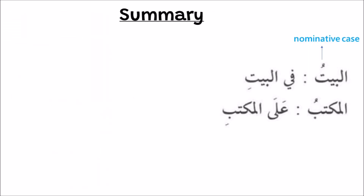Summary: al-Baytu is in nominative case, so it has the normal ending. Al-Baytu becomes al-Bayti when in genitive case — majroor — because it is preceded by harf jar fi.